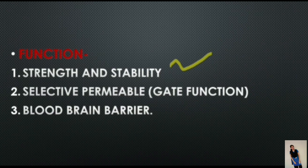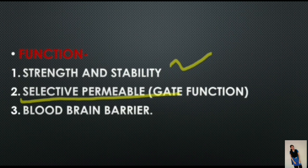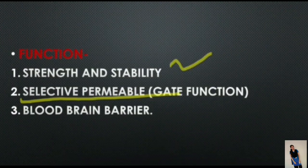The second function is selective permeability, also called the gate function. Tight junction forms a selective barrier for small molecules and a total barrier for larger molecules. In epithelial and endothelial cells, tight junction is the most apical intercellular junction, functioning as a selective diffusion barrier between a cell and its neighboring cell. This function is known as the barrier or gate function.